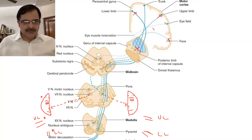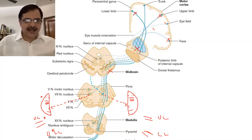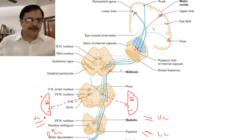Now about the brainstem — the midbrain, pons, and medulla. If the lesion is in the midbrain, the opposite side of the face, upper limb, and lower limbs will be affected. So up to the level of the midbrain, if there is any lesion, the opposite side of the face — that is the lower part of the face — and opposite side of upper limb and lower limbs will be affected.